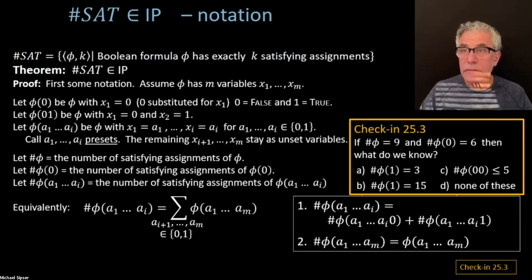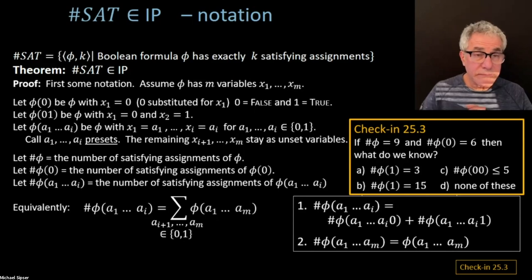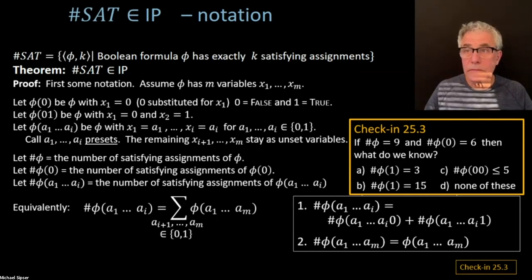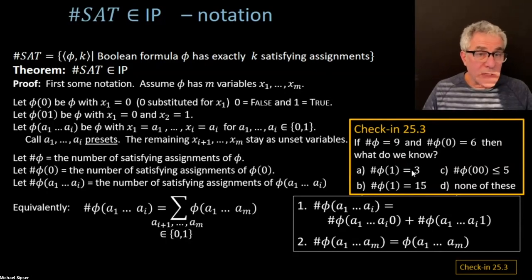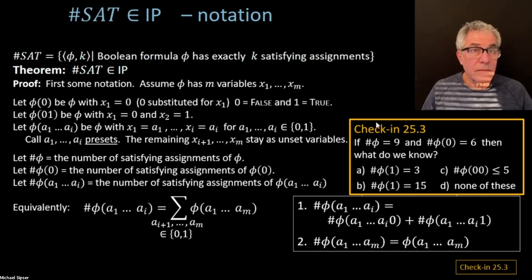About 80% are getting this. So yes, A is the correct answer. If there are nine satisfying assignments altogether, and there are six satisfying assignments where the first variable is set to zero, then there are only three satisfying assignments where the first variable is set to one, because nine has got to equal six plus three. That's actually this fact number one. It's not going to be fifteen. So it's just A.